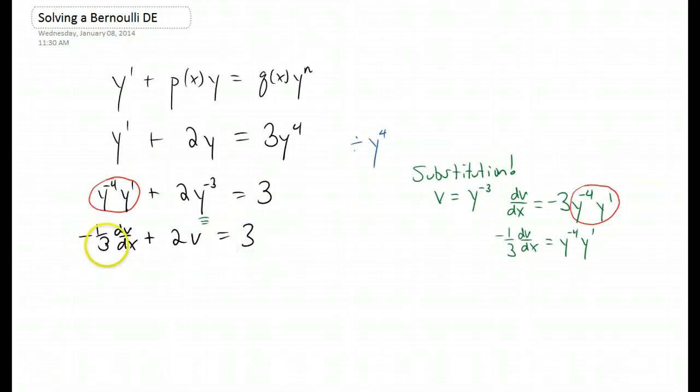Now if we multiply through by this negative one third term, I'm just going to call it v prime now, minus 6v equals negative 9. So what our substitution has done is it's actually turned our Bernoulli differential equation into a first order linear differential equation.